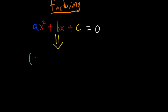So what it's going to look like is dx plus e times fx plus g equals 0. Those are just unknowns. They're going to depend on what a, b, and c are. But this is what it's going to look like. This is the general form for a factored quadratic. It's going to be something times x plus something, all that times another something times x plus something.